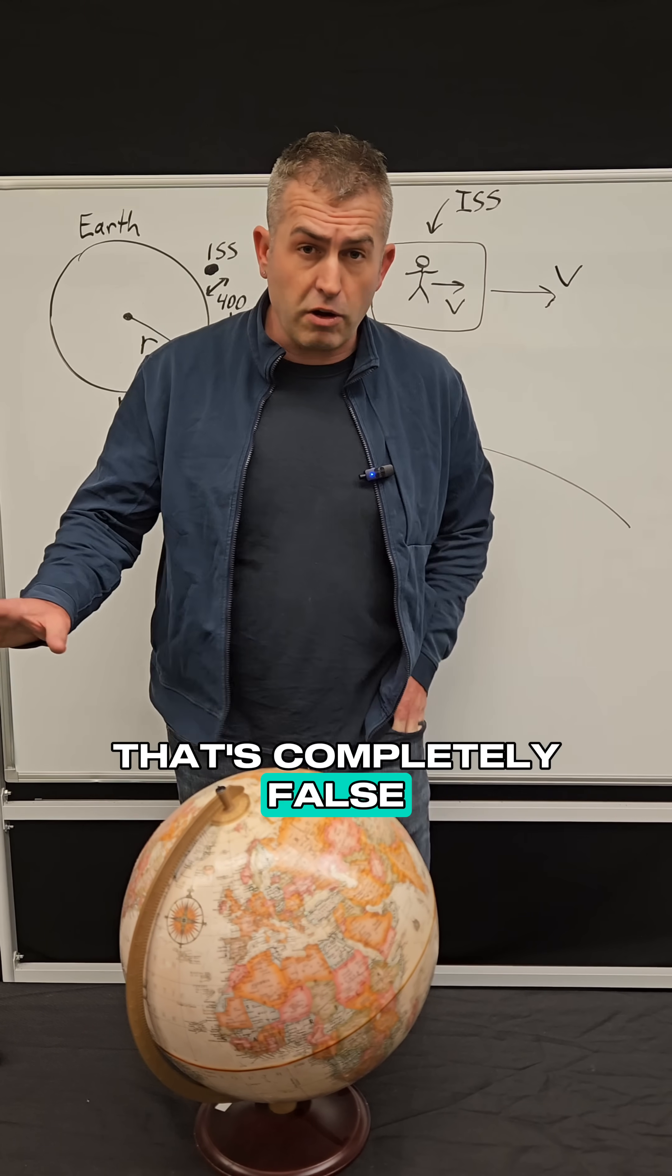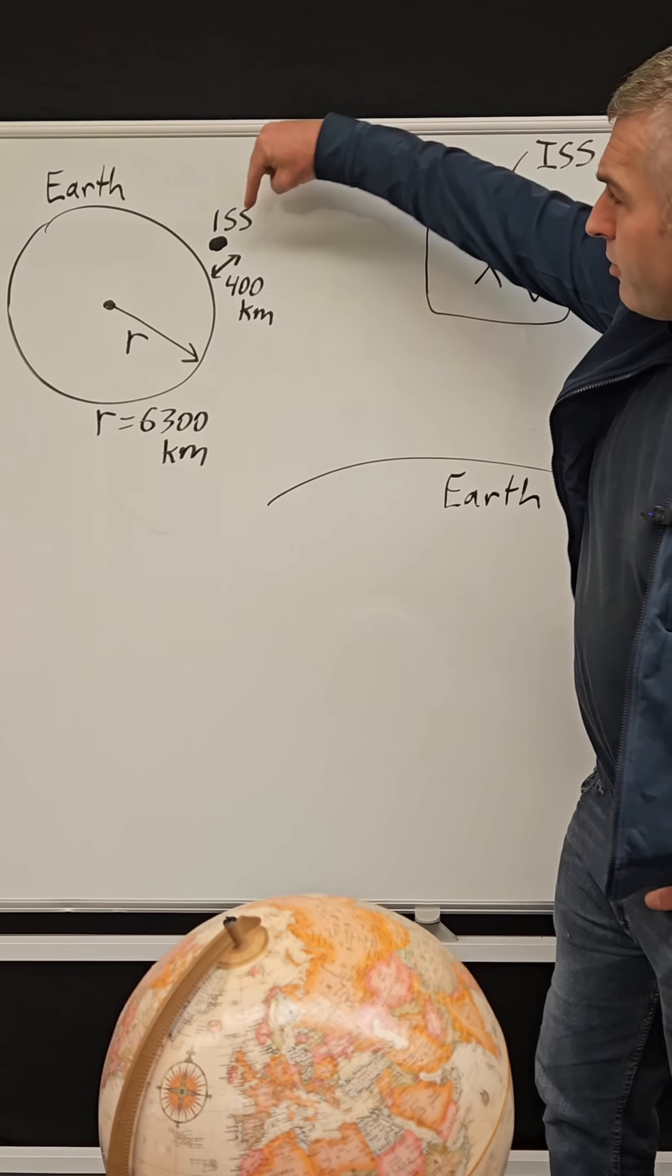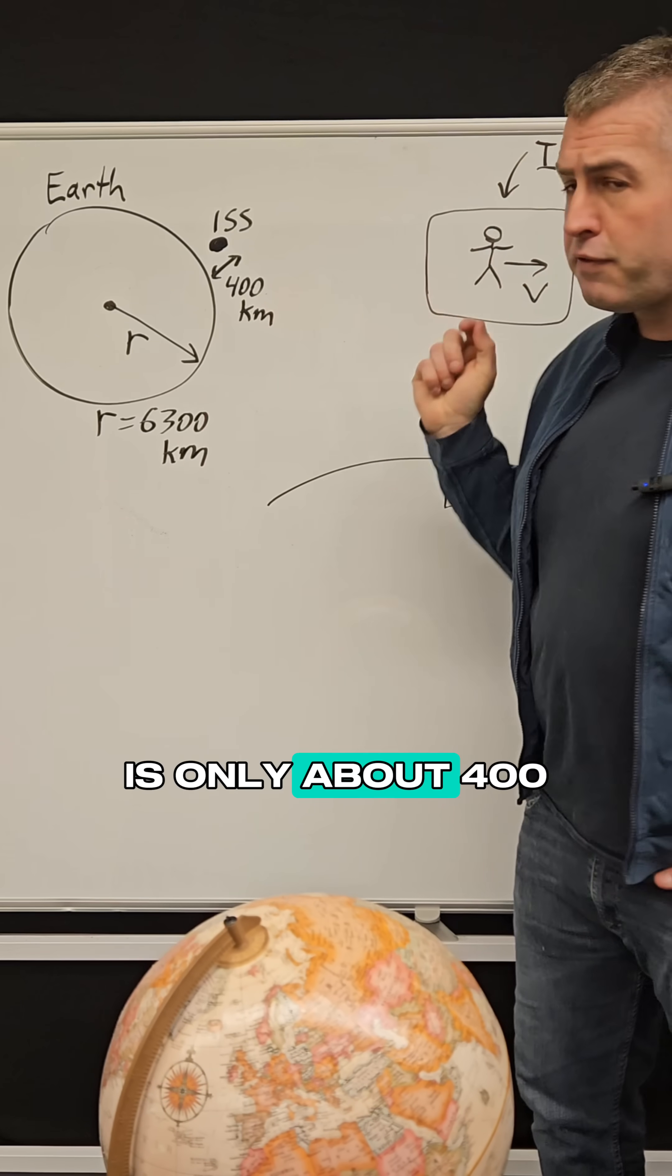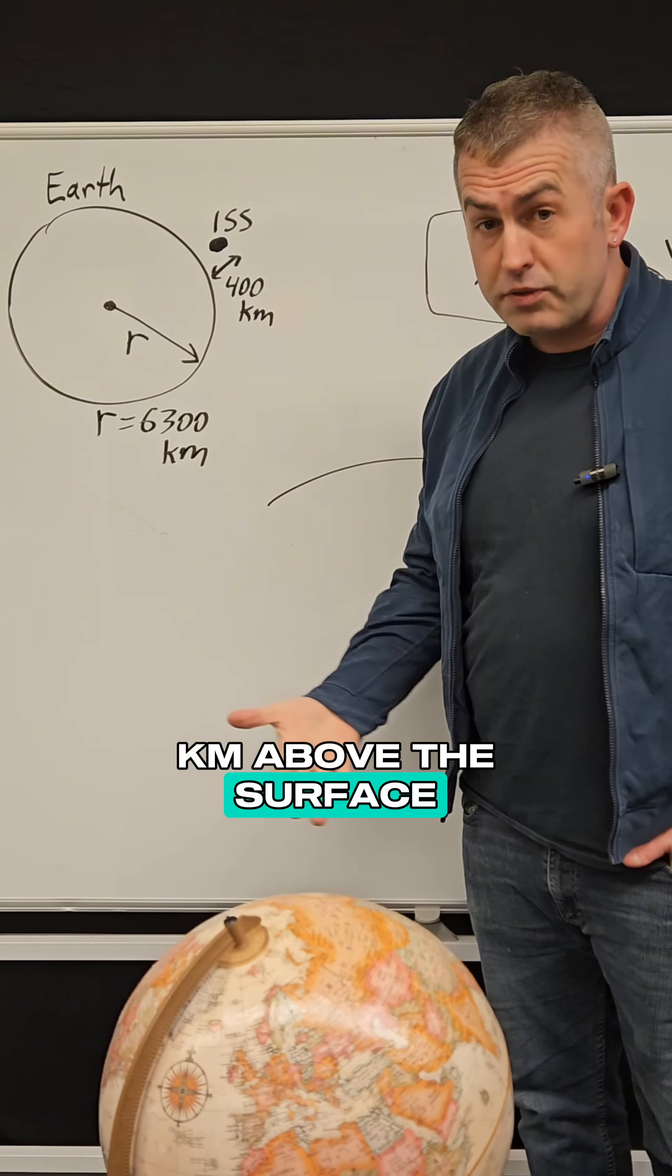But the reality is that's completely false, because the International Space Station, the ISS, is only about 400 kilometers above the surface of the Earth.